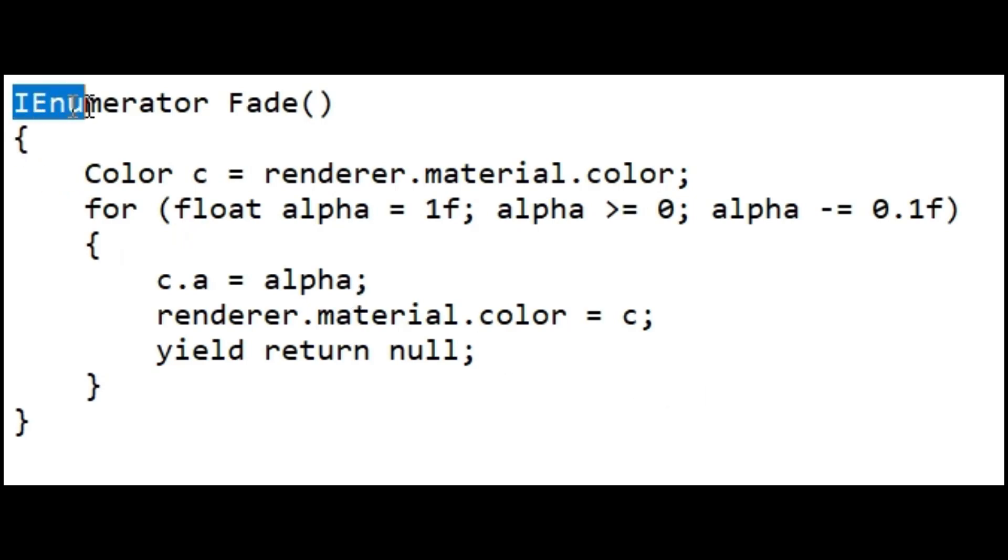A coroutine is a method that you declare with an IEnumerator return type and with a yield return statement included somewhere in the body. The yield return null line is the point where execution pauses and resumes in the following frame.